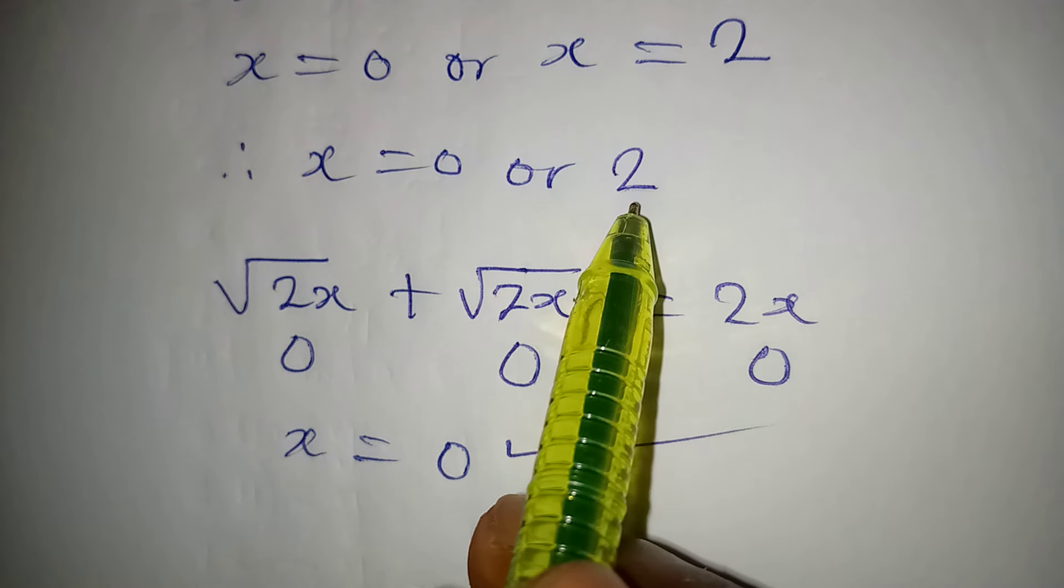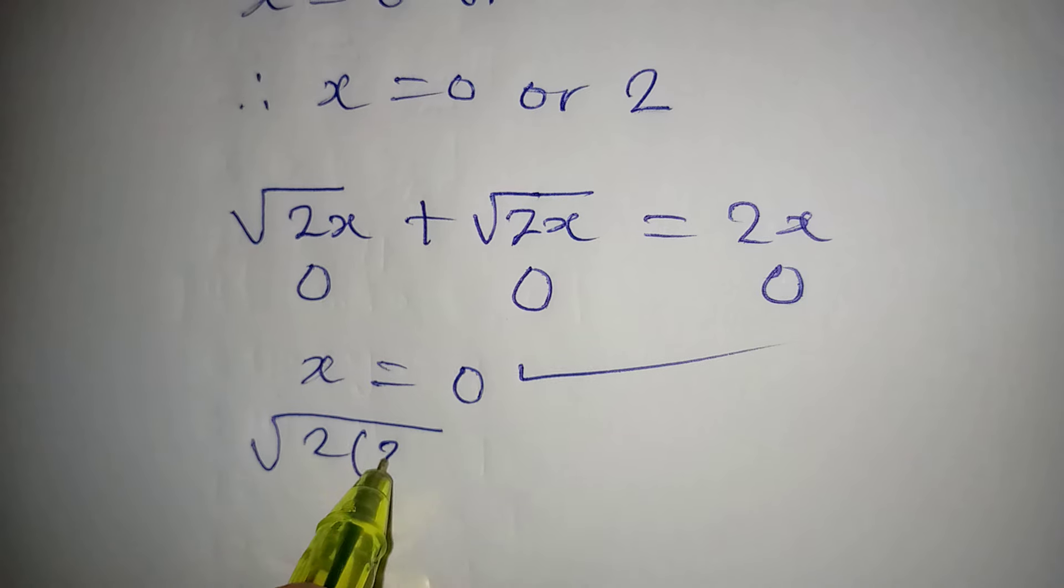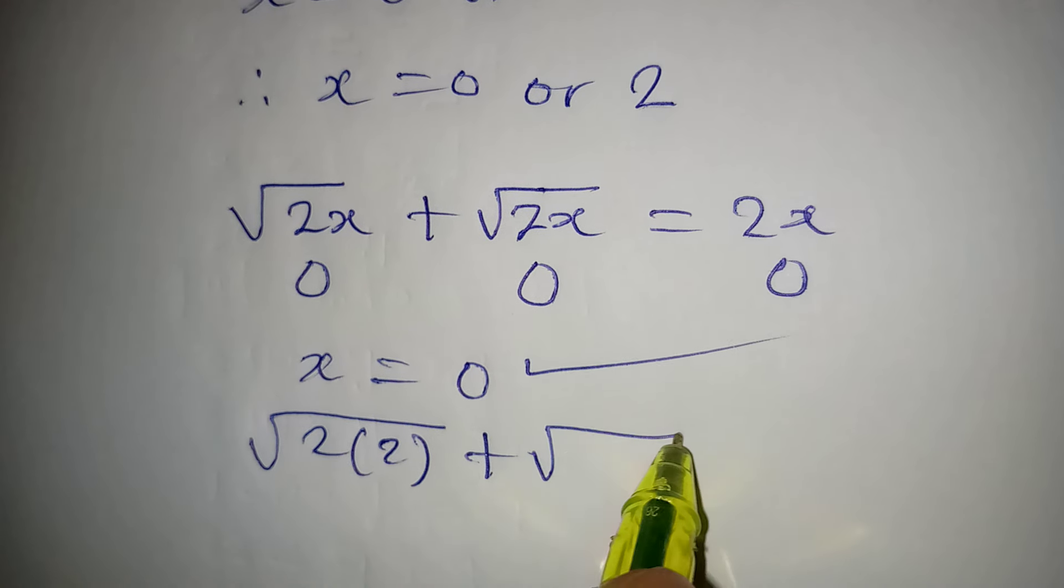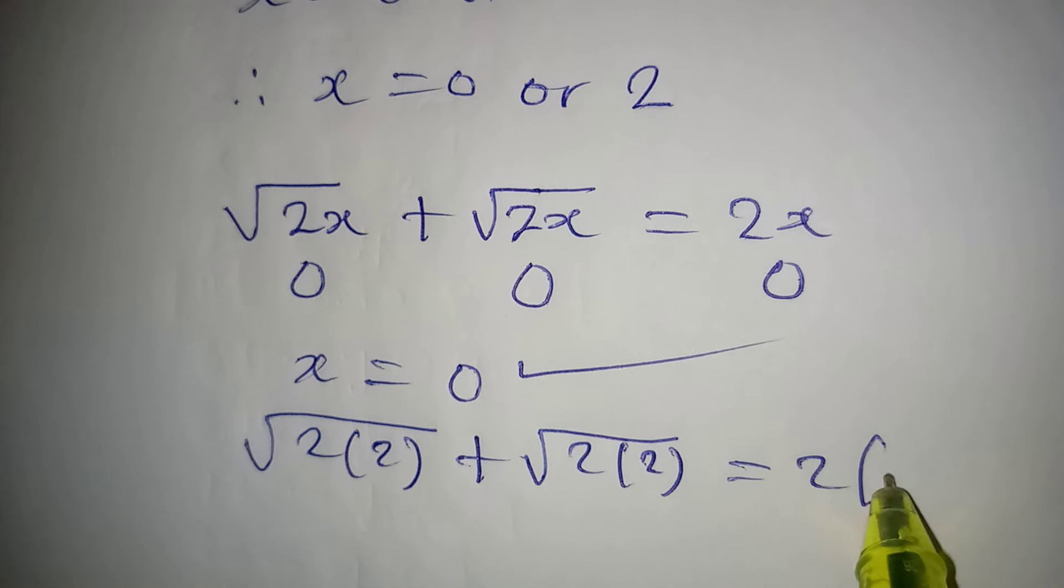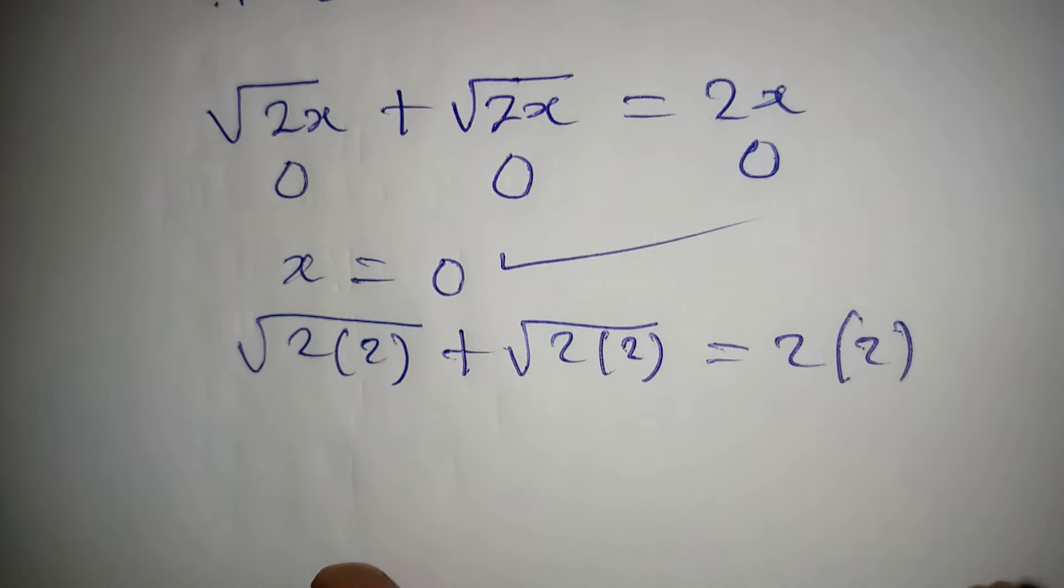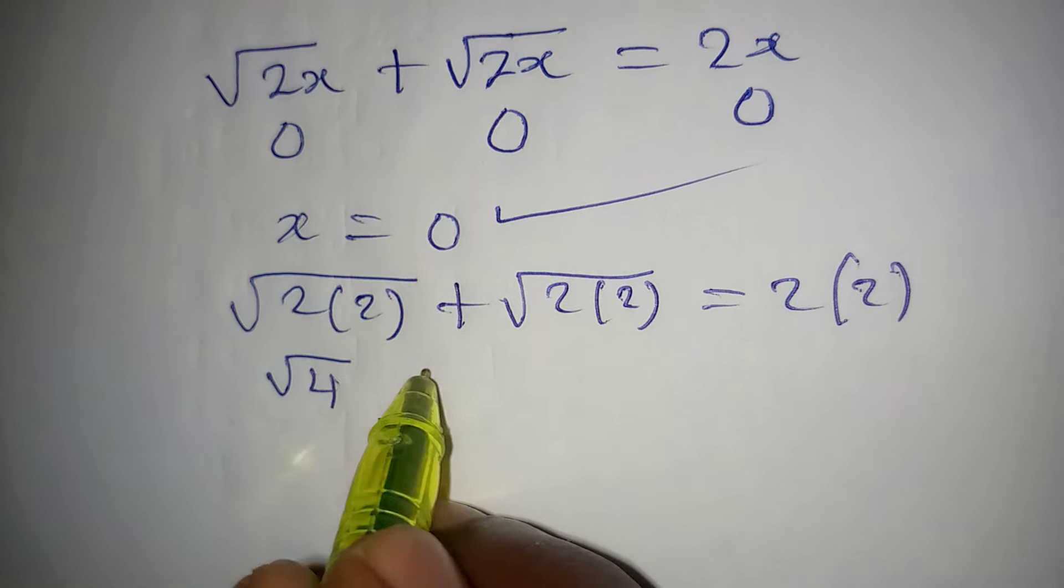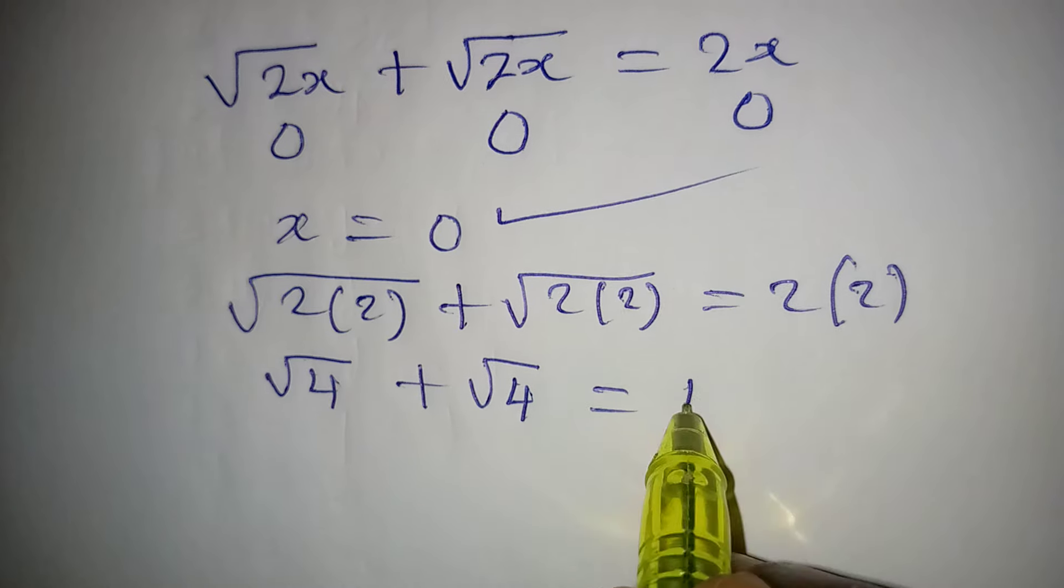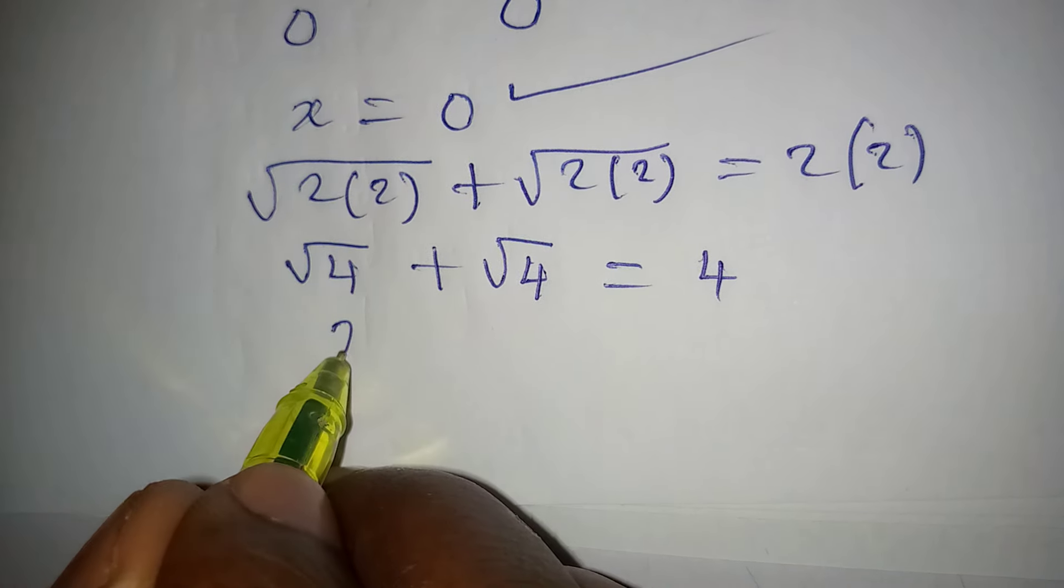If we put in the value of x as two, then we'll be having square root of two times two plus square root of two times two equal to two times two. Let's see if this will be equal. We have square root of four plus square root of four equal to four.